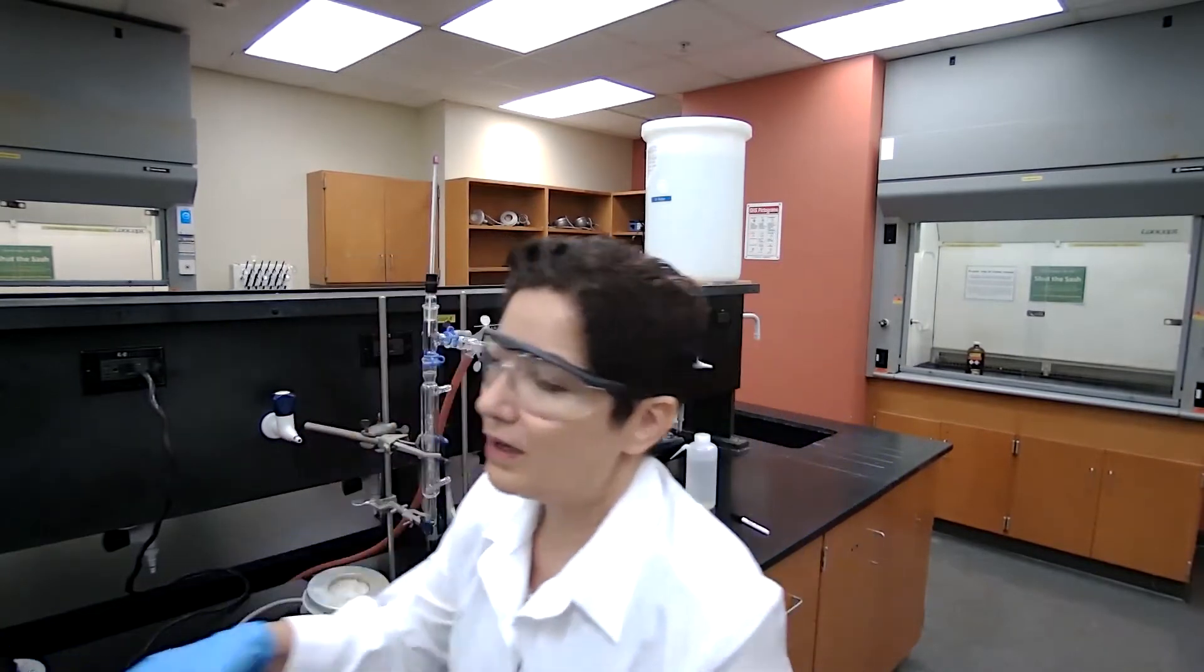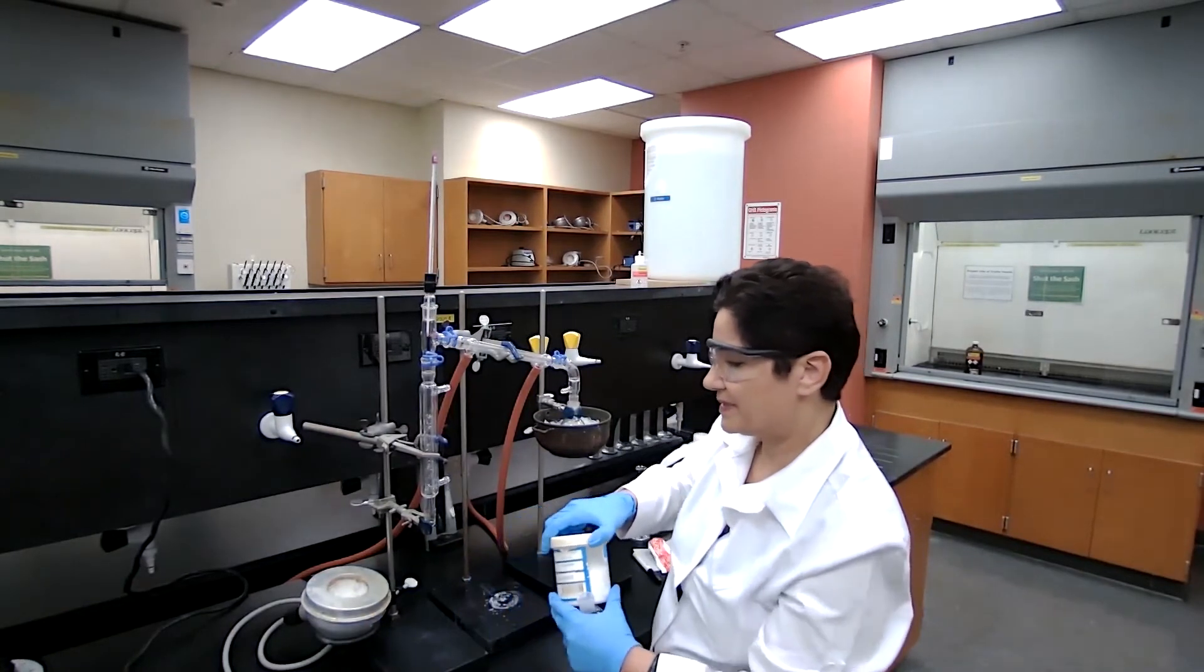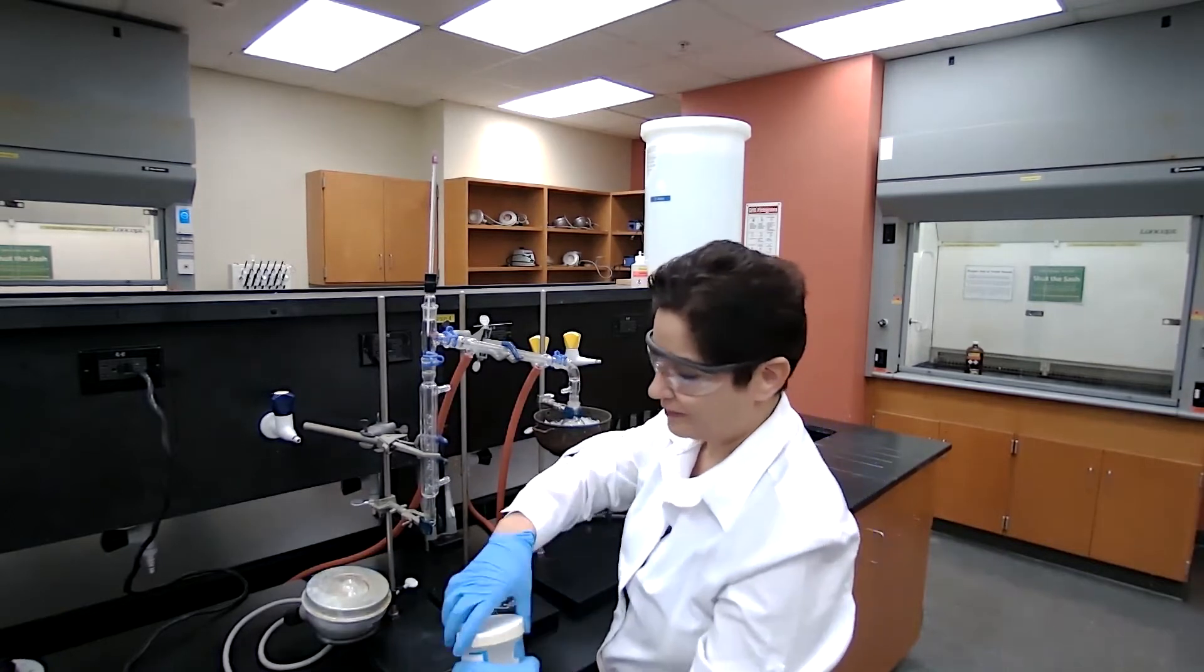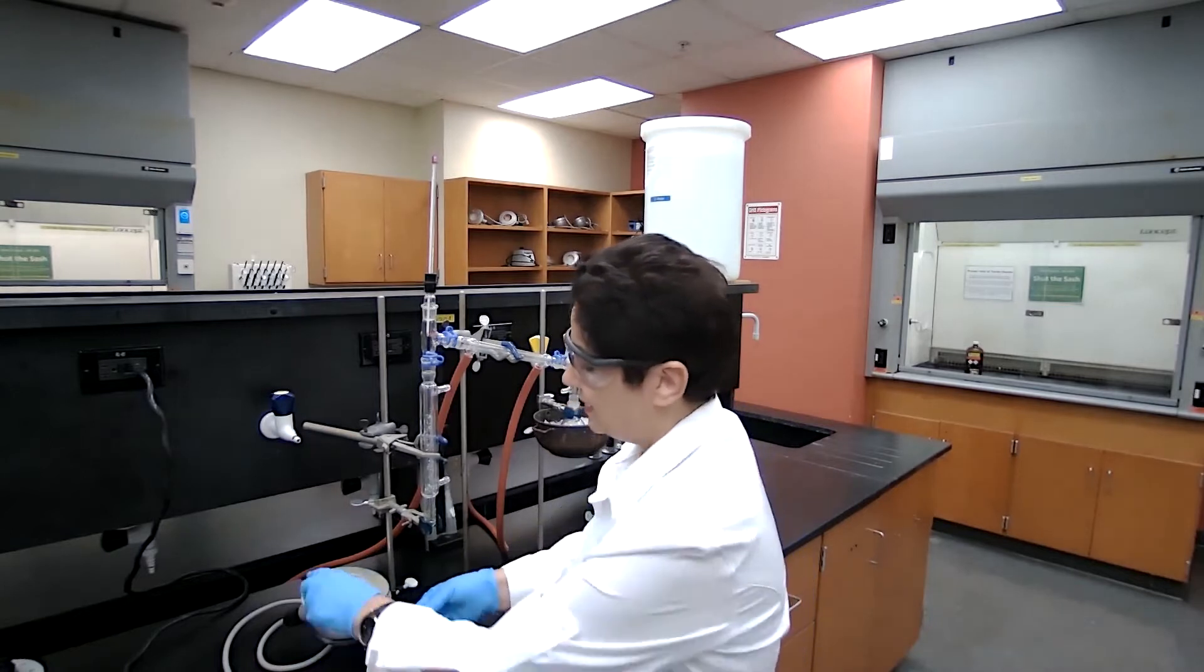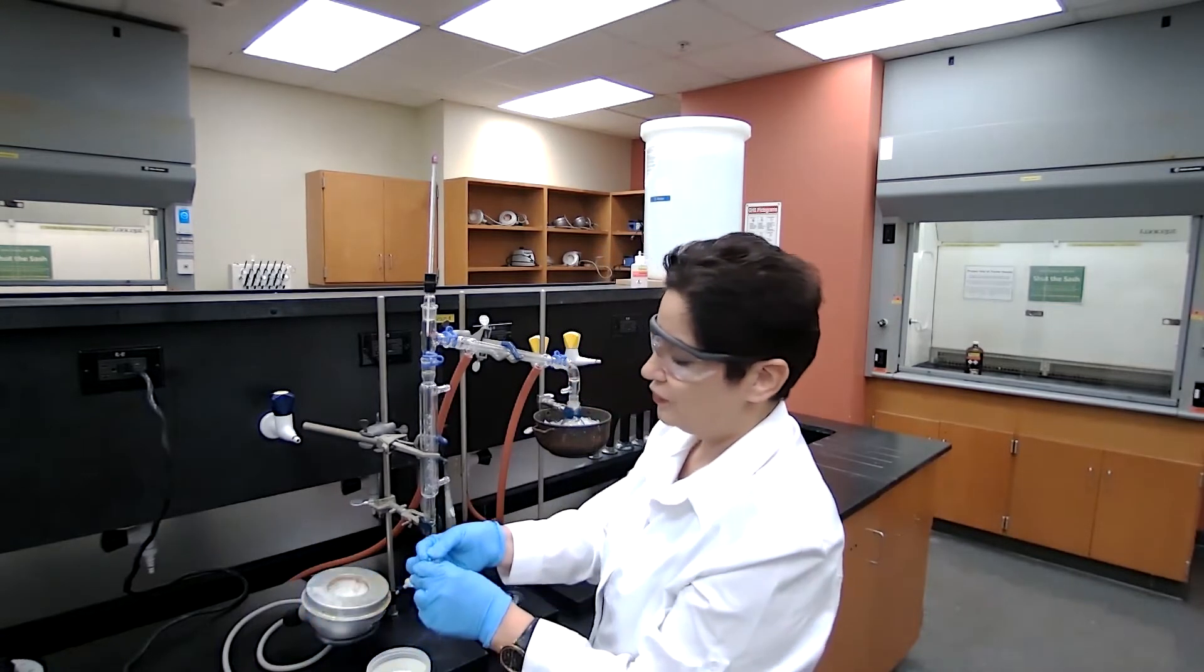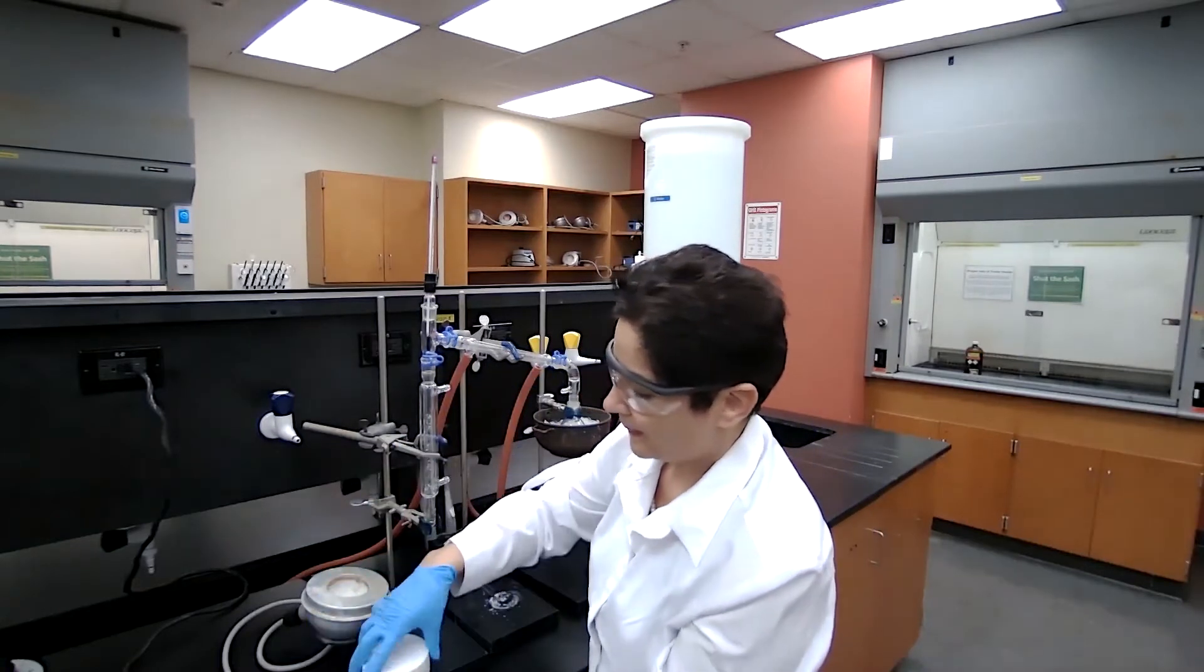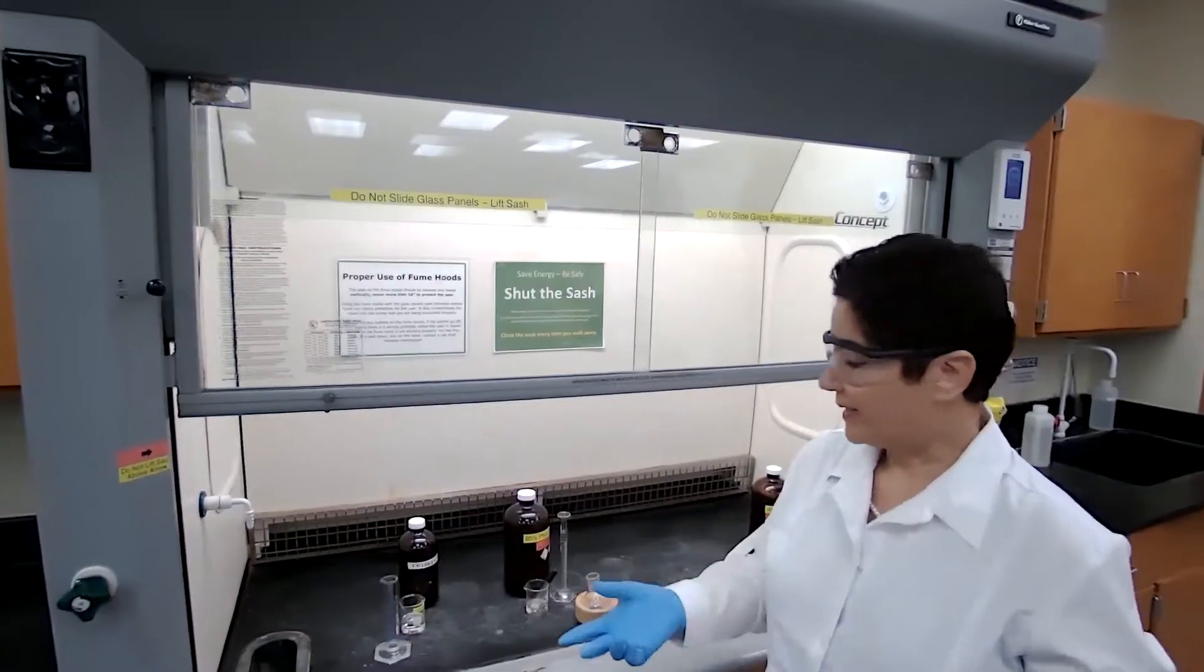I want to also add the boiling chips. The order of when to add the boiling chips doesn't really matter, but you want to make sure before we start the distillation we add the boiling chips. So I'm adding three to four pieces of boiling chips. And we add the acid. For the acid, we are going to the fume hood.